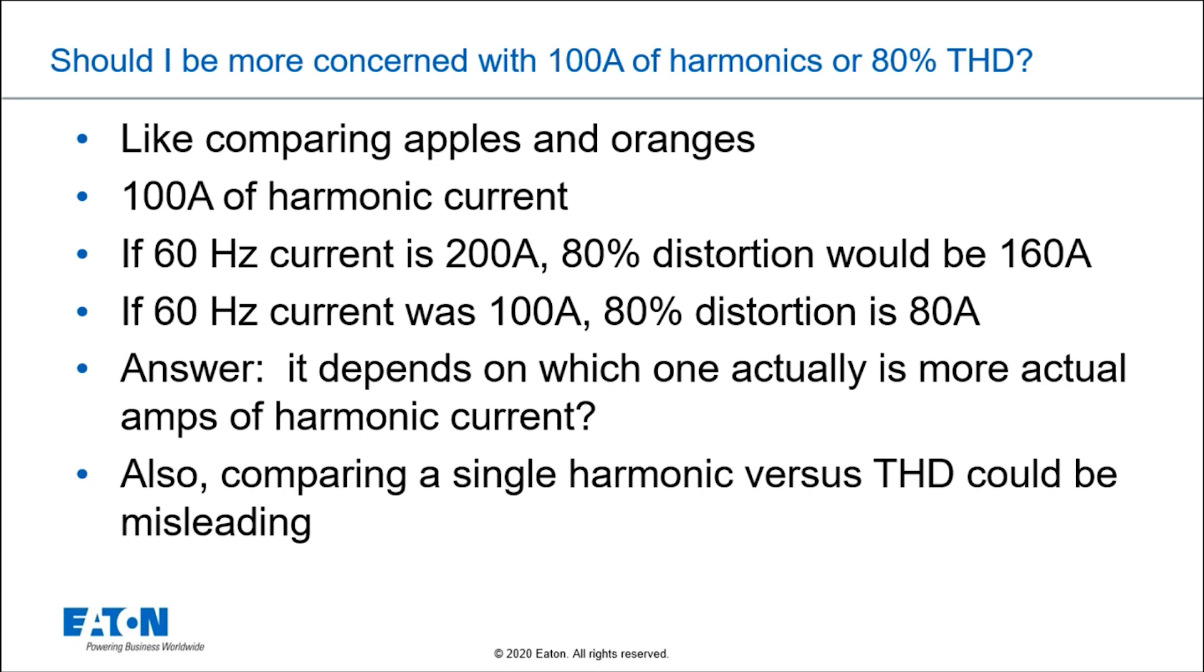So, for example, if I had 100 amps of harmonic current, if the 60 hertz current was 200 amps, then 80% distortion on 200 amps would be 160 amps. So comparing that to 100 amps, obviously 80% distortion would be worse.